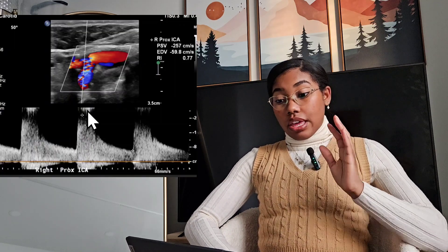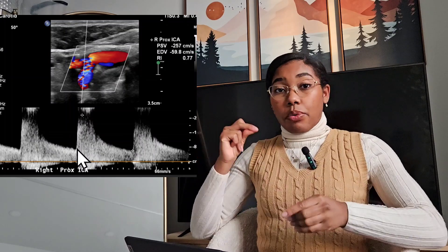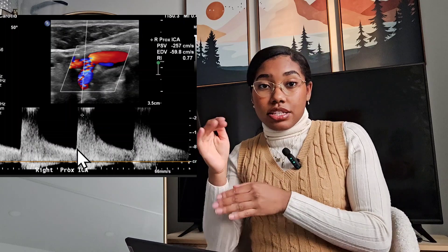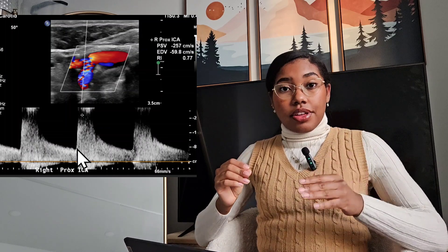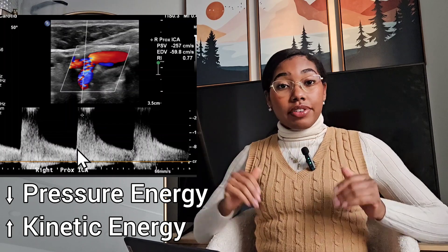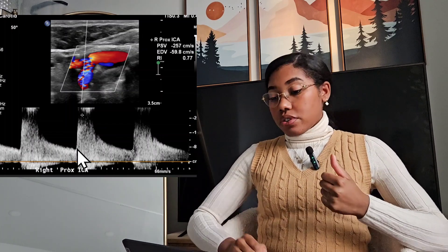Now let's look at the spectral waveform. There is high velocity flow here within the stenosis — the blood is trying to zoom through this narrow area. Each car is trying to get through where it needs to go, so it's high velocity. This pressure energy at the stenosis turns into kinetic energy because of the high velocity — squeeze through this narrow area. As you can see, you have velocities of 257 cm/s, which is pretty high, especially for this area of the body. The total amount of energy is the same, but it's just changing form.